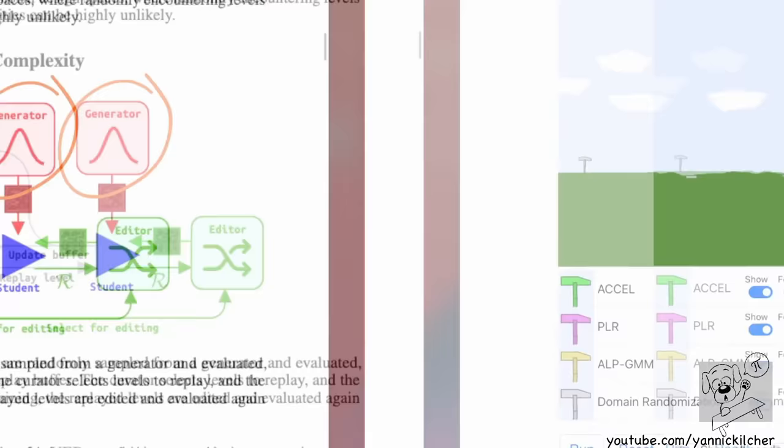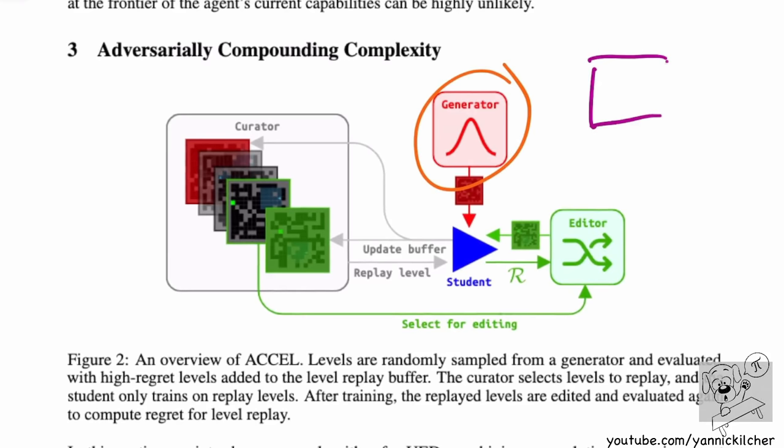You want to have some sort of level generator — essentially what I have here on the right — with the ability to create different levels. This doesn't need to be parameterized like it is here. For example, in this maze world, all I have is an empty room and the ability to place blocks in it. Every pixel can either be a wall or not a wall — that's a generator. The generator can just place blocks, and there's no need for a slider controlling difficulty; that's going to be done completely automatically.